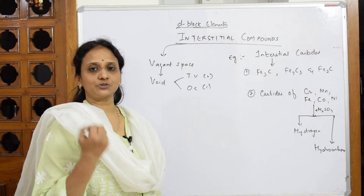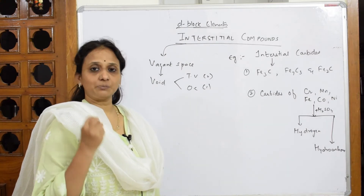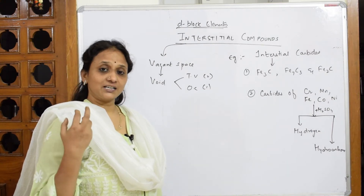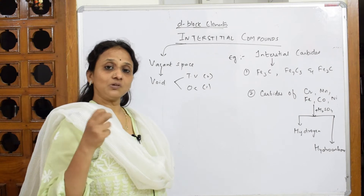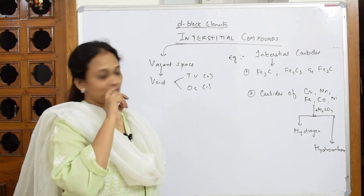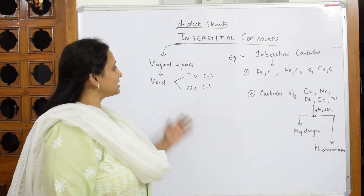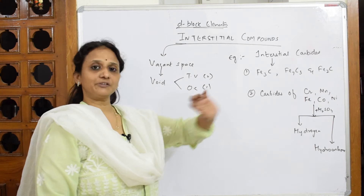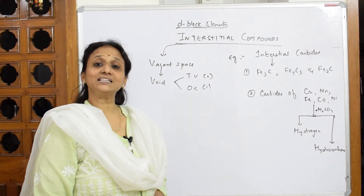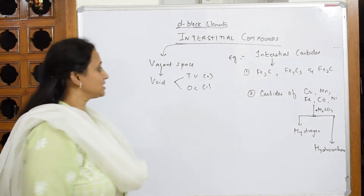Smaller atoms like hydrogen, carbon, nitrogen, and sulfur can all fix into the lattices. When they fix into the lattices, they form different types of compounds — those are interstitial compounds.